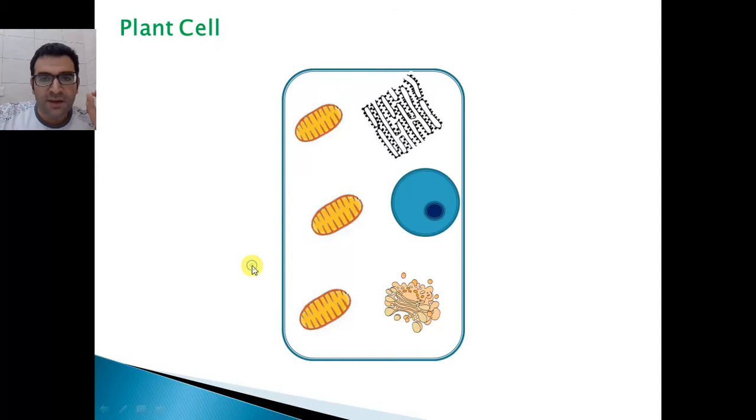Now let's move to the plant cell. The plant cell has the same organelles except the centriole, as you can see. So this is the first difference - plant cells have no centriole.